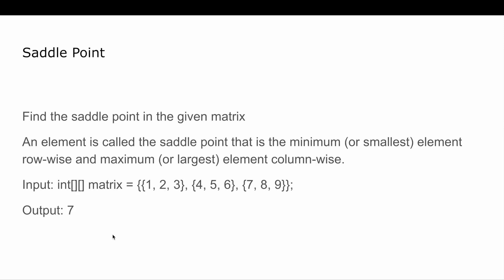The next question is saddle point. Find the saddle point in a given matrix. What is a saddle point? An element is called a saddle point that is the minimum or smallest element in the row and maximum element in the column. You have to write the code to find the number in the given matrix which is minimum in the row and maximum in the column.